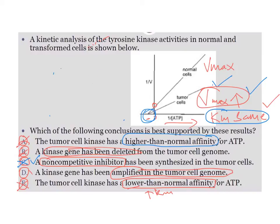This was an enzyme kinetics question from Kaplan Medical. I hope this helped you understand Km, Vmax, increase and decrease in Km, increase and decrease in maximum velocity, and non-competitive inhibition — where Km remains the same and Vmax is decreased. Also note that in competitive inhibition, the apparent Km increases but maximum velocity remains the same. You can watch a video on competitive and non-competitive inhibitors on my YouTube channel. Thanks for watching.